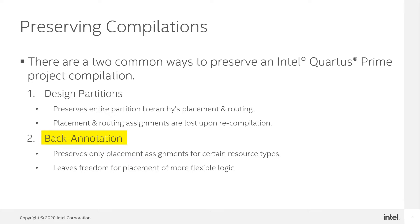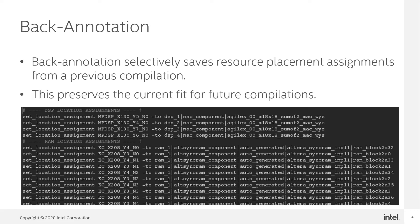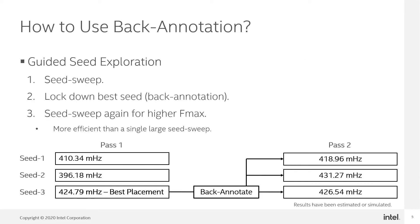On the other hand, backannotation only preserves the placement assignments for design entities. Rather than locking down the compilation, backannotation leaves flexibility for the placement of adjacent logic. Backannotation selectively saves certain resource assignments from a previous compilation, preserving the current fit for future compilations while maintaining flexibility around the placement and routing of adjacent logic. In the screenshot in the slide, you can see an example of DSP and RAM location assignments.